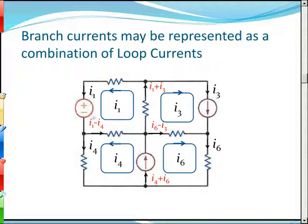Let's imagine that I1 is a current that goes around this way, I4 goes around this loop, I6 goes around here, and I3 goes around here. When those two currents — just like water currents — pass through a resistor, they combine. I1 is going this way and I3 is going this way, and as they pass through, I1 and I3 combine.